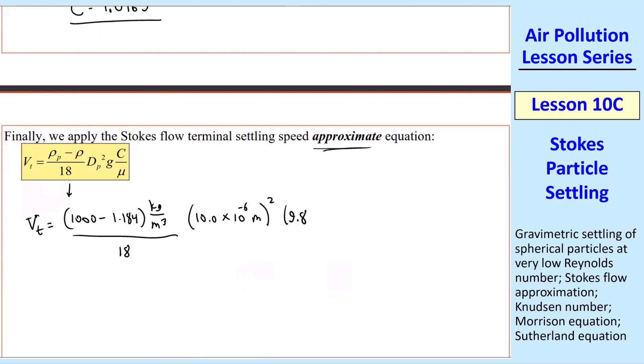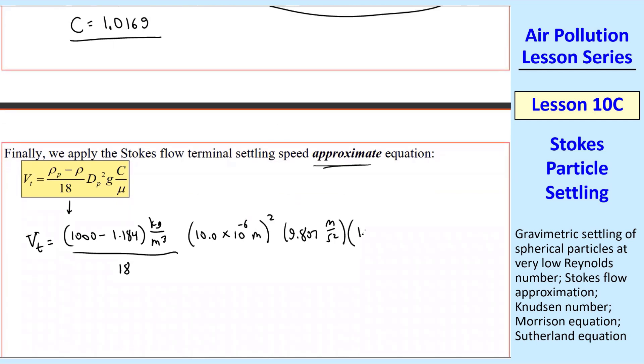G, always use 9.807 unless specified otherwise. And then our Cunningham, we just calculated at the top there, was 1.0169 unitless.